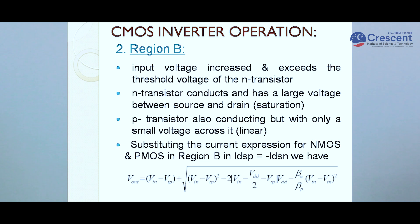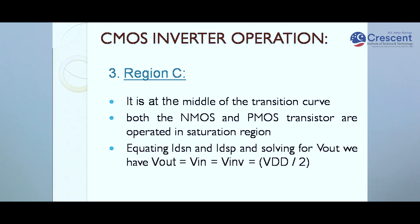In region B, the input voltage increases and exceeds the threshold voltage of the N transistor. The N transistor conducts with a larger voltage between source and drain, placing it in saturation. The P transistor is also conducting but with only a small voltage across it, placing it in the linear region. By substituting the current expressions I_DSN equals minus I_DSP and solving for VOUT, we get the VOUT expression shown in the slide.